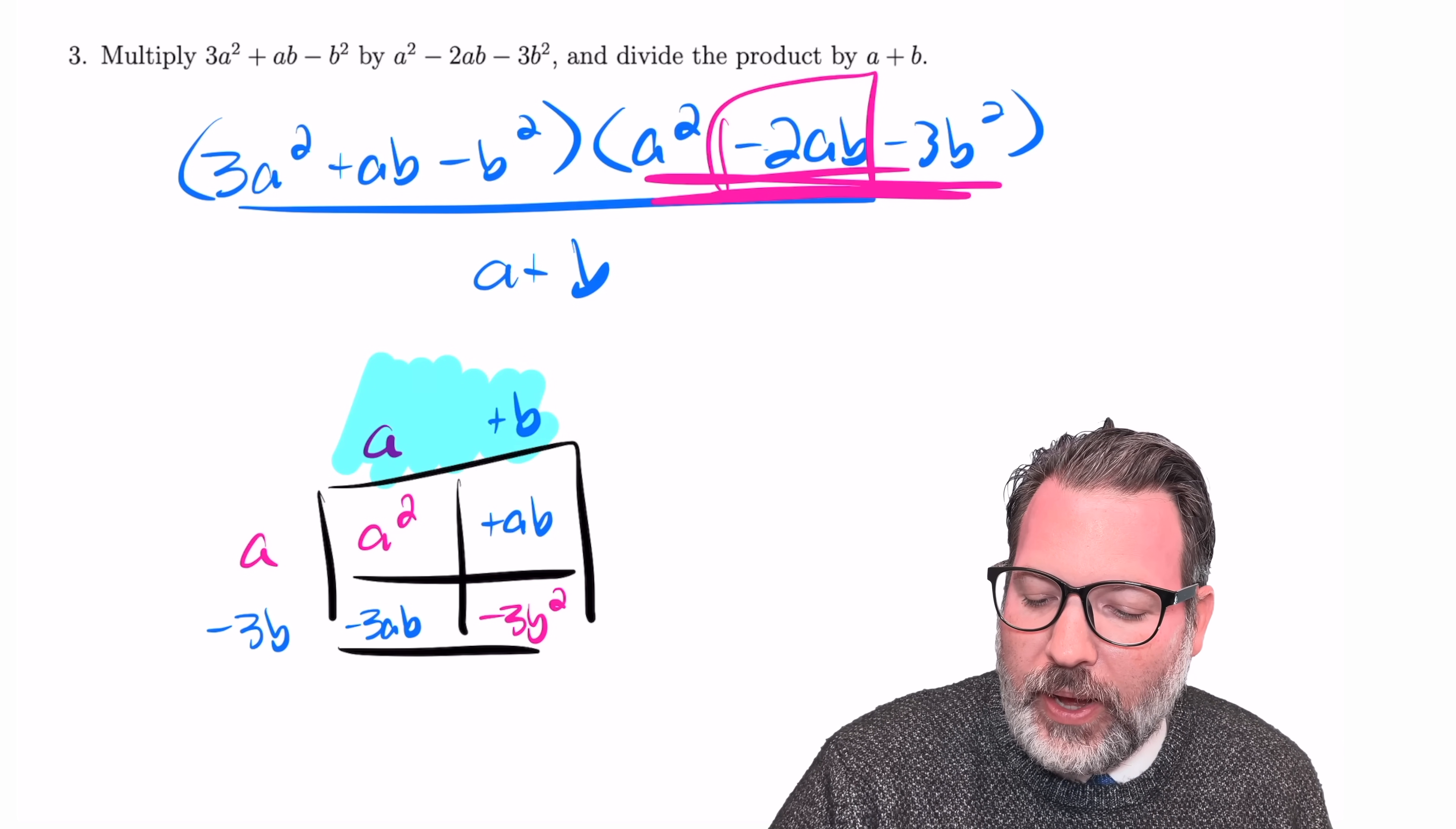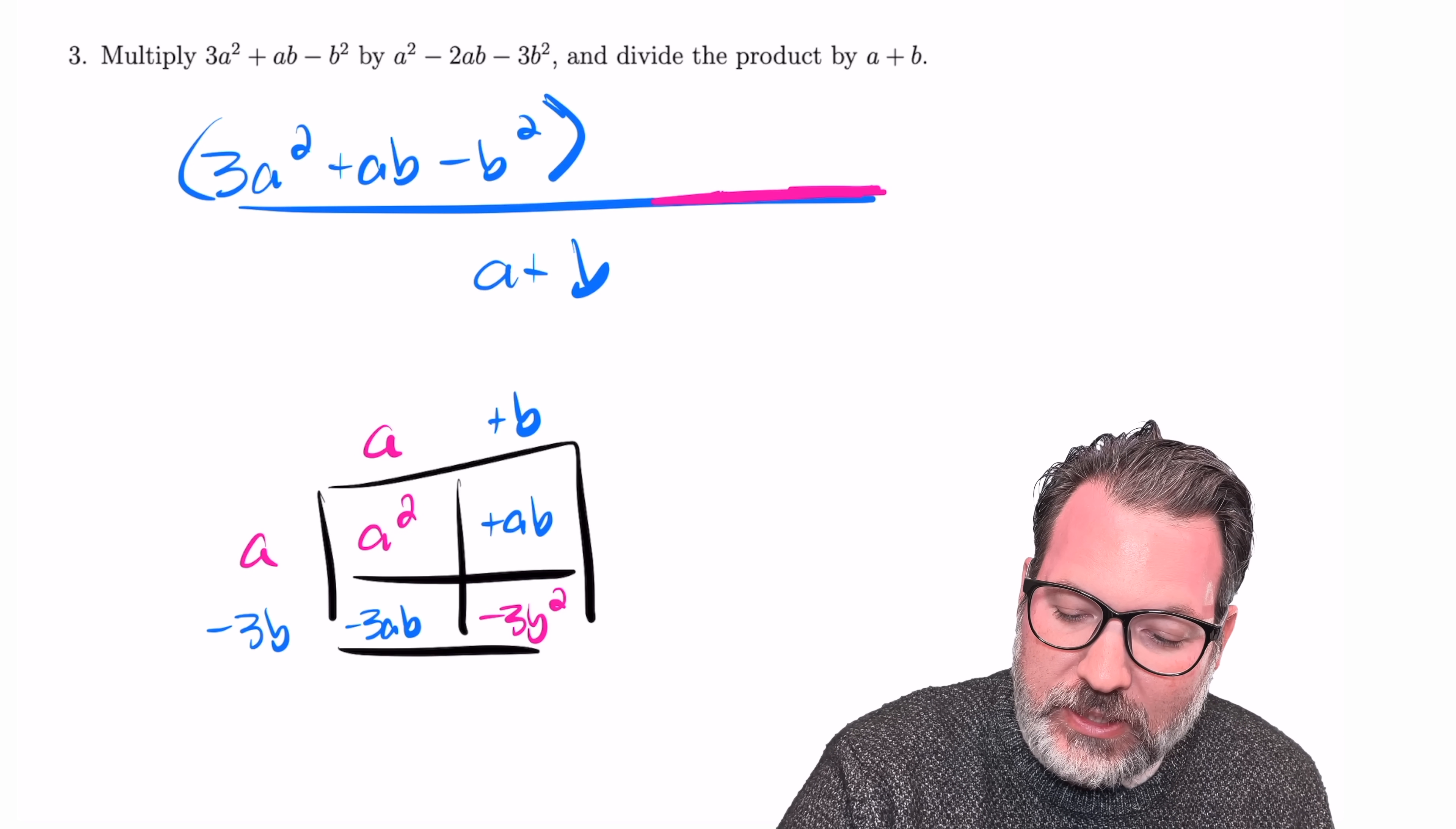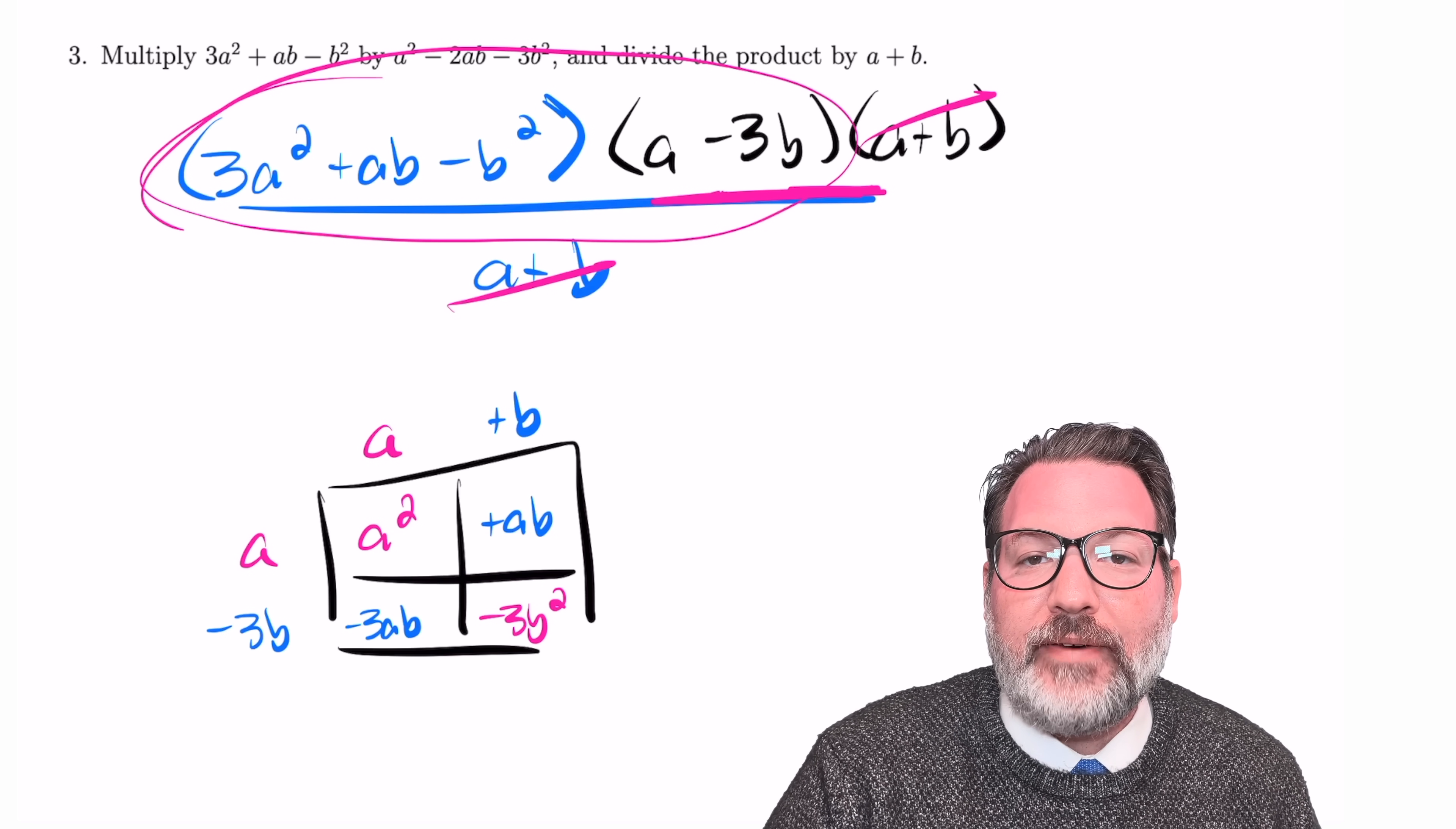And then even more importantly, oh my goodness, look at that. There is the a plus b factor that we wanted to try to find to be able to cancel out this a plus b in our denominator. So in fact, what's happening here is our very clever MIT test writers from 1869 have given us a trinomial that is factorable, that we can write as a minus 3b times a plus b, and that therefore we can cancel with this a plus b denominator and simplify the multiplication that we're going to have to do here.